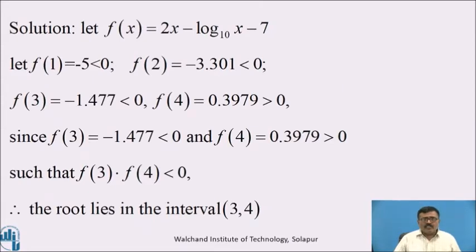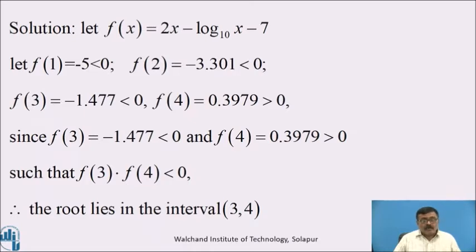Solution. Let f(x) = 2x minus log₁₀(x) minus 7. To find the interval, we have to substitute x = 0, 1, 2, 3, and so on, where the sign of f(x) changes either from negative to positive or from positive to negative. Then the corresponding value of x is your interval. To find the interval here, we substitute x = 1, 2, 3, and so on.